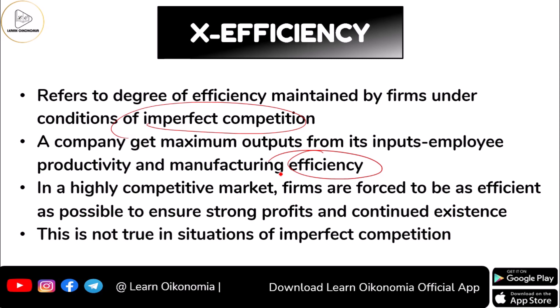In a highly competitive market, firms will always be able to attain some efficiency — at least a normal profit would be there. But under imperfect competition, this will not happen every time. The idea of rationality is questioned because there exist imperfections, and there can be chances of loss. That is what Leibenstein was talking about in his idea of x-efficiency.